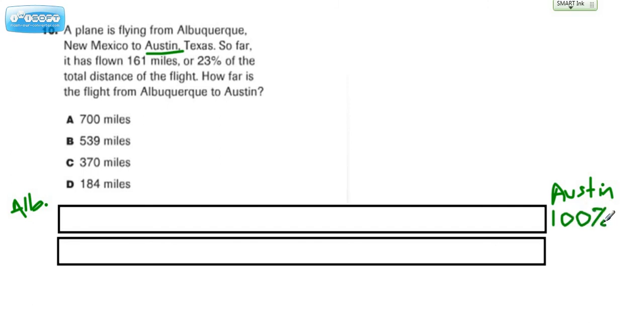Now what we're trying to figure out is how many miles is that. This whole bar will represent how many miles. Now here's what we know. We know that about 23% of it, so if we show 23% on this and make it somewhat proportional, it's a little bit less than a quarter of it. 23% is how much they've gone so far.